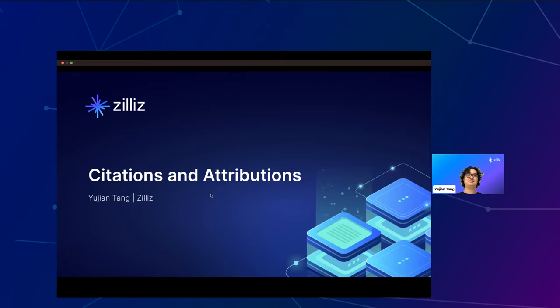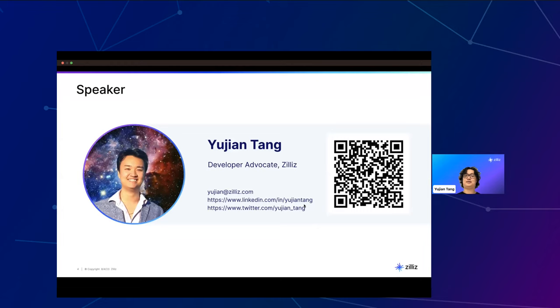Thanks for that introduction, Emily. I'm really excited to talk with everyone today about citations and attributions with RAG. This is something I've been seeing a lot of chatter about in the last few months, and so building something around this has been really exciting. My name is Yujin Tang. I'm a developer advocate at Zillus, as Emily has said. I've put a QR code up here that you can scan — it takes you to my LinkedIn so you can connect with me there.